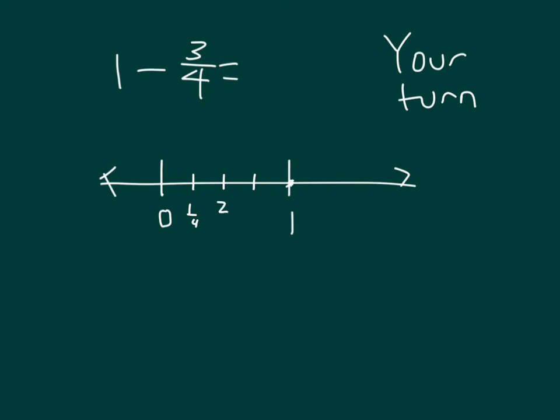Next, let's go ahead and label what our number line would be, including making 1 whole and renaming 1 whole as 4 fourths. Subtracting 3 fourths, count back with me. 1 minus 1 fourth is 3 fourths, 2 fourths, and 1 fourth.